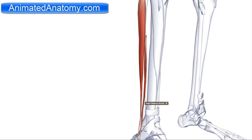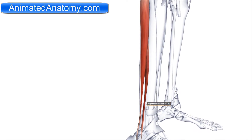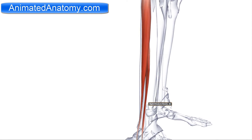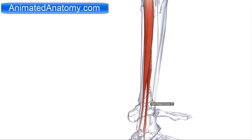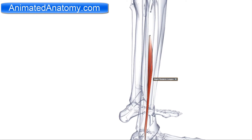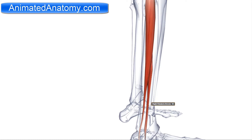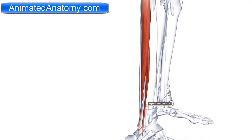Now I will talk about the muscles in the lateral compartment of the leg. There are only two muscles in this compartment. The bigger one is called the peroneus longus, or the fibularis longus, and the smaller one is called the fibularis brevis.